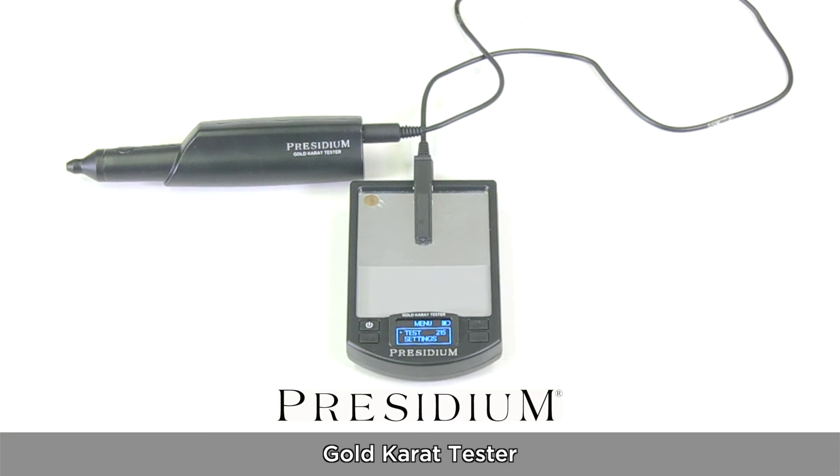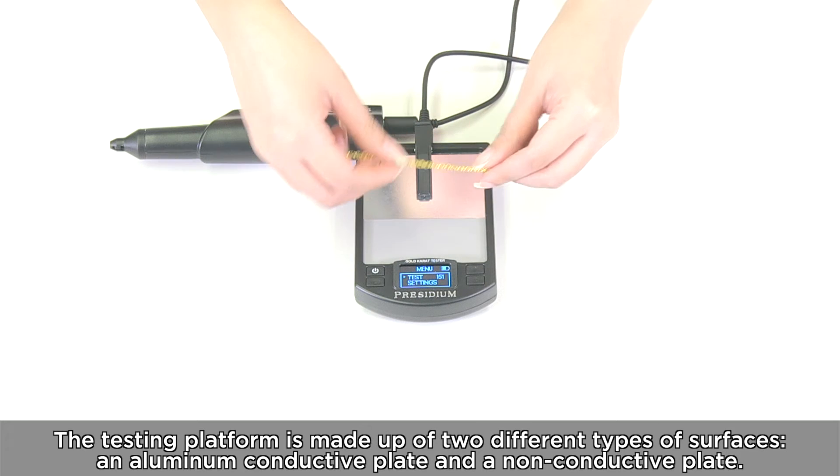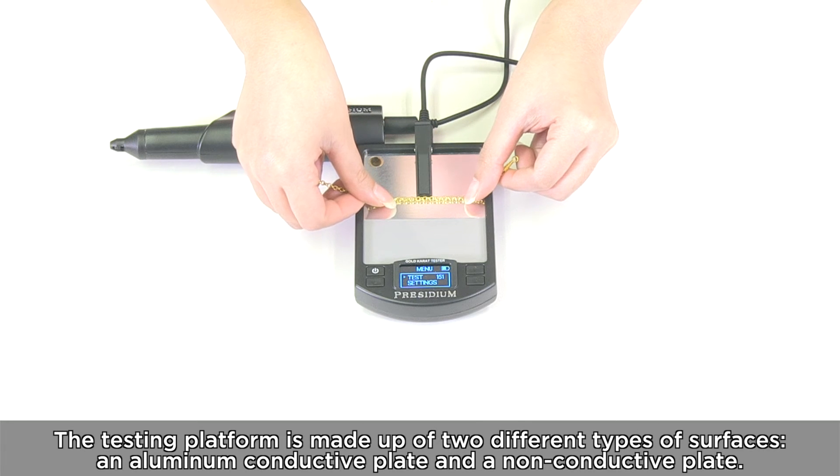The Presidium Gold Carat Tester using of the non-conductive and conductive plates of the testing platform. The testing platform is made up of two different types of surfaces, an aluminum conductive plate and a non-conductive plate.